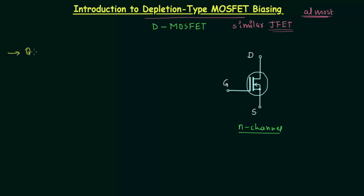The operating point, or Q-point, or the quiescent point, is the point having the coordinates VGSQ and IDQ. Out of these, VGSQ is the input voltage and the x-coordinate, while IDQ is the output current or the drain current and is the y-coordinate. To obtain the operating point, we require two plots.